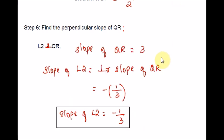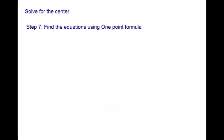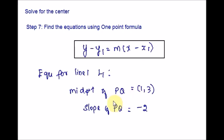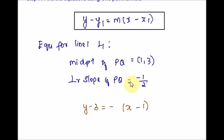We have the midpoints and the slopes. Now we need to solve for the center. We can use the one-point formula, plugging in the corresponding slope and midpoints to get two equations. We can then solve the two equations to find the XY values, which is nothing but the center. For equation for line L1, plug in the midpoint of PQ as X1, Y1 and the perpendicular slope of PQ as M. Make sure you are using the perpendicular slope. Let this be equation number 1.